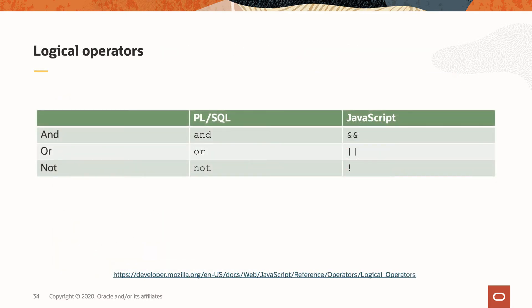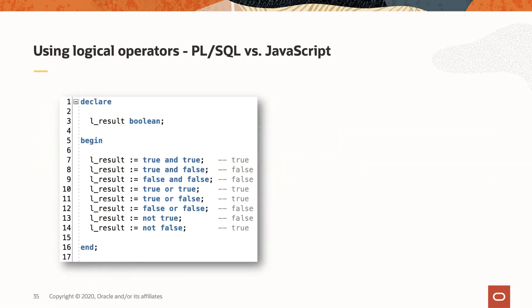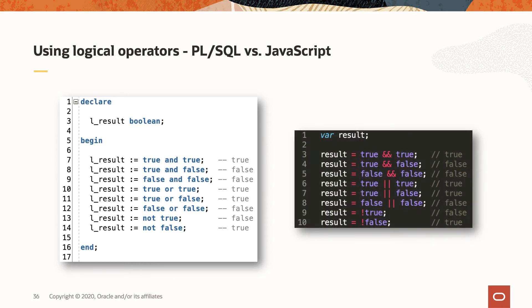Finally, here are the logical operators. In PL/SQL, you use the keywords and, or, and not. In JavaScript, you use double ampersands for and, double pipes for or, and bang for not. The Boolean logic doesn't change — true and true is still true, and true and false is still false. It's just the operators you need to swap out.